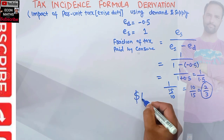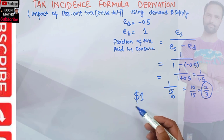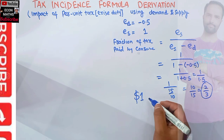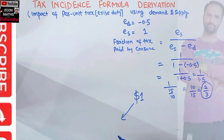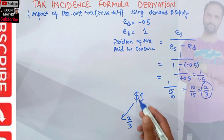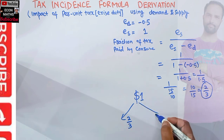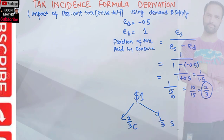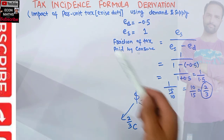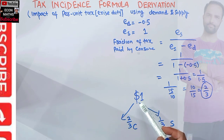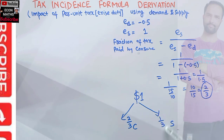If a $1 specific per unit tax is imposed, consumers will shoulder two-thirds of the tax and the remaining one-third will be borne by the seller. So if a per unit tax of $1 is imposed on supply, consumers bear two-thirds and sellers bear one-third of the tax.